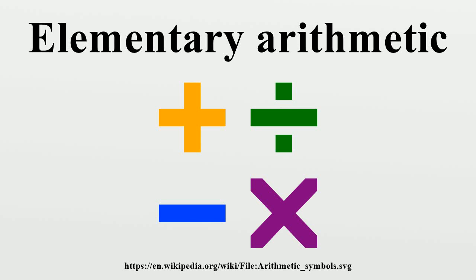Elementary arithmetic is the simplified portion of arithmetic that includes the operations of addition, subtraction, multiplication, and division. It should not be confused with elementary function arithmetic. Elementary arithmetic starts with the natural numbers and the written symbols that represent them. The process for combining a pair of these numbers with the four basic operations traditionally relies on memorized results for small values of numbers, including the contents of a multiplication table to assist with multiplication and division. Elementary arithmetic also includes fractions and negative numbers, which can be represented on a number line.